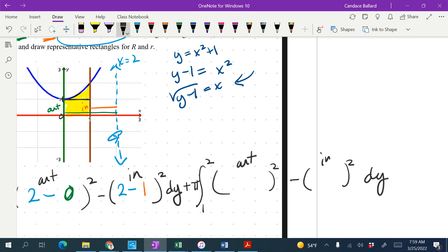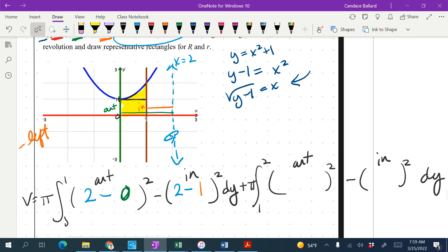Again, I need to identify my outer and my inner. So let's see, my outer function looks like the blue one, right? Because it's further away from the axis of revolution.